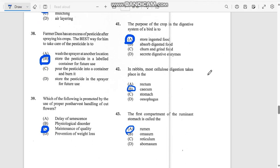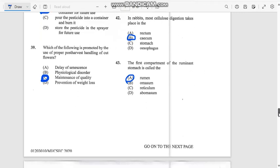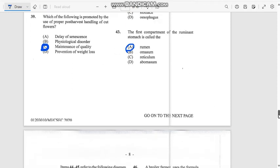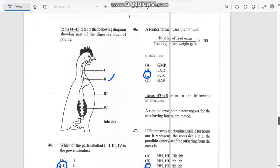Number 42: In rabbits, cellulose digestion takes place in the cecum. Number 43: The first compartment of the ruminant system is called the rumen.